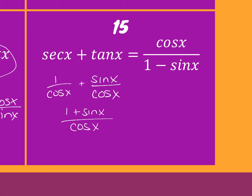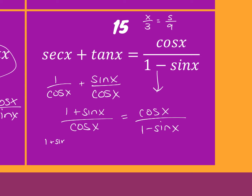Let's say you got to this point — you're kind of at a dead end on the left side. But there's another trick: if you have two fractions on either side of the equal sign — like x over 3 equals 5 over 9 — how would you solve for x? You can cross multiply, right? The same rules apply here with expressions. Because I have one fraction on either side of the equal sign, I can cross multiply. So I get one plus sine x times one minus sine x equals cosine squared x.